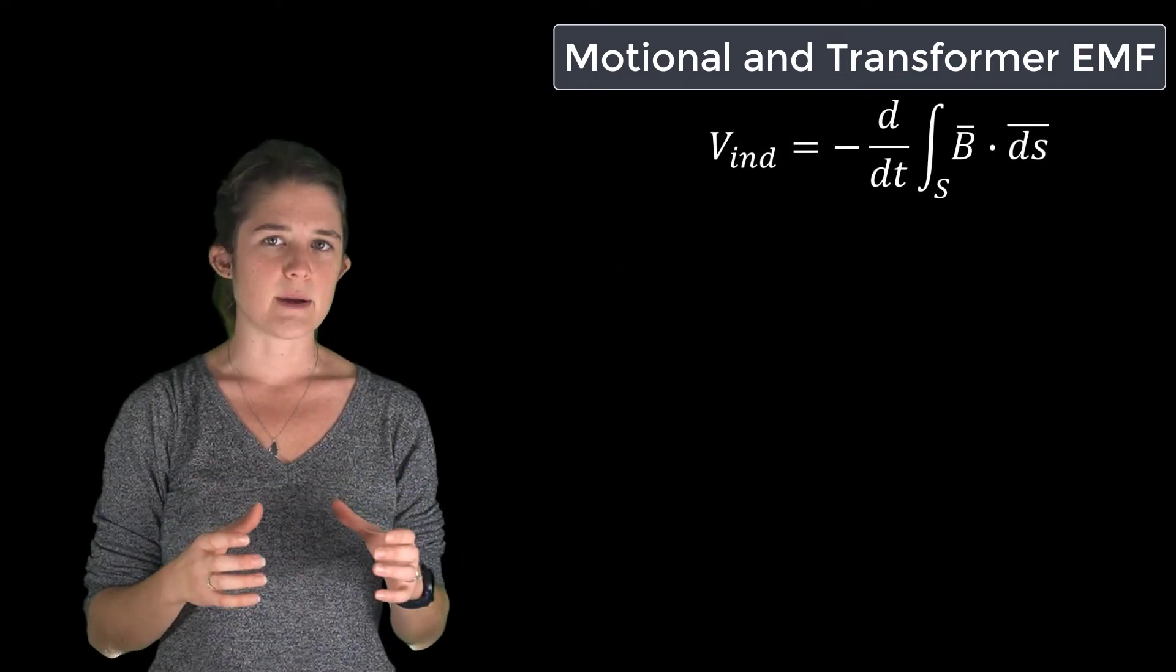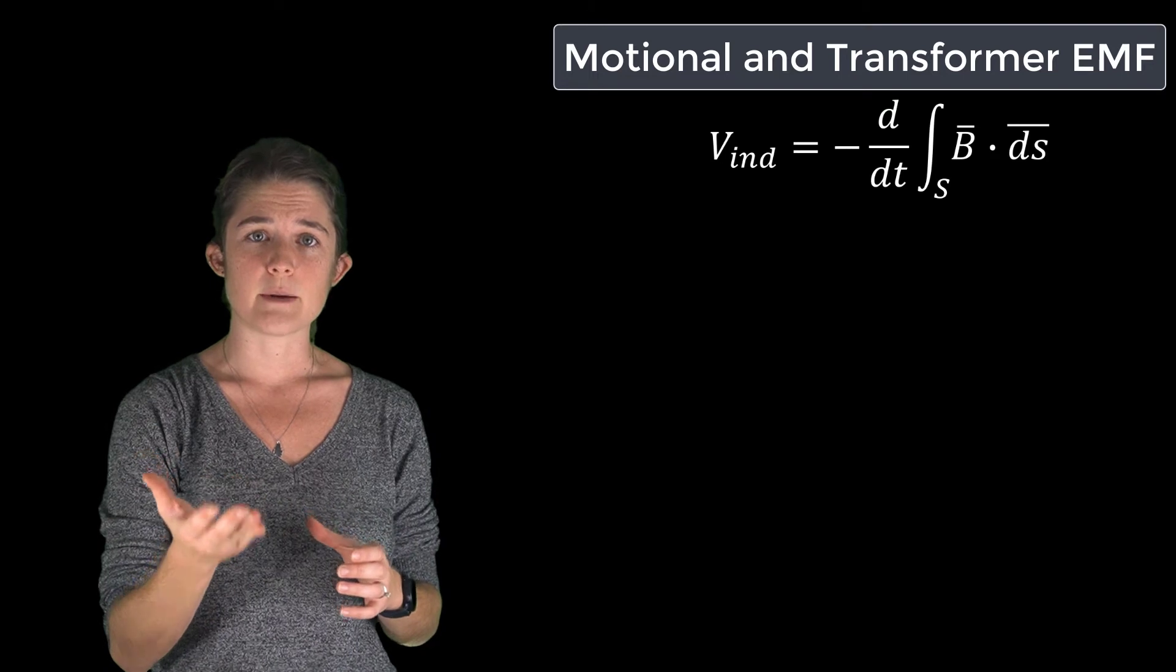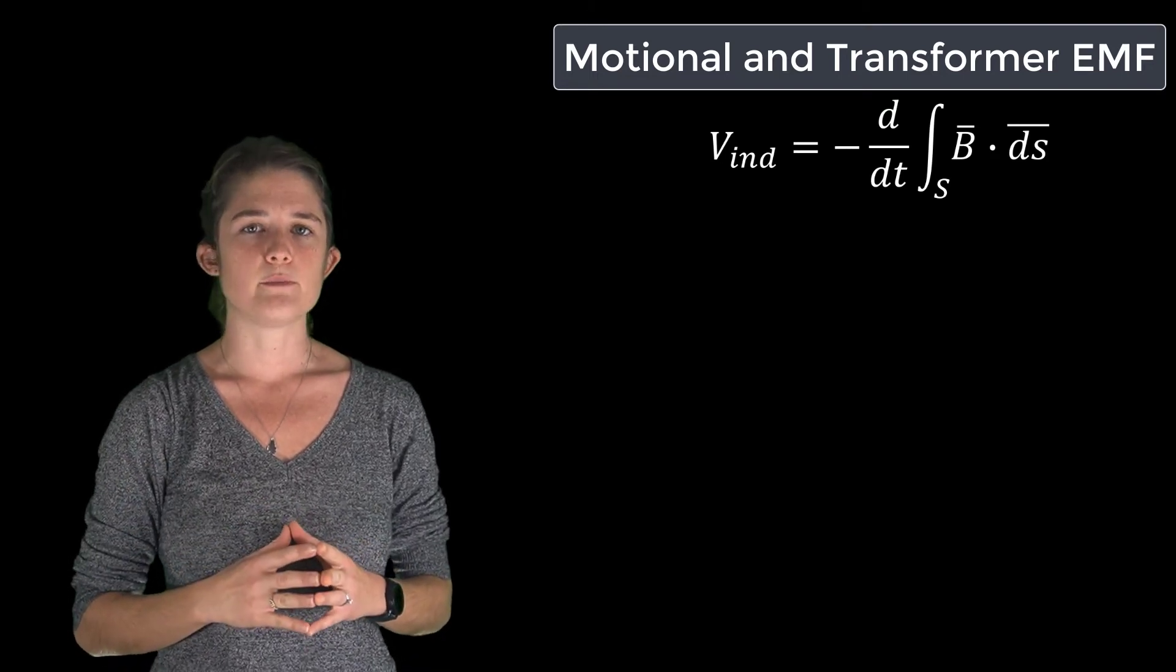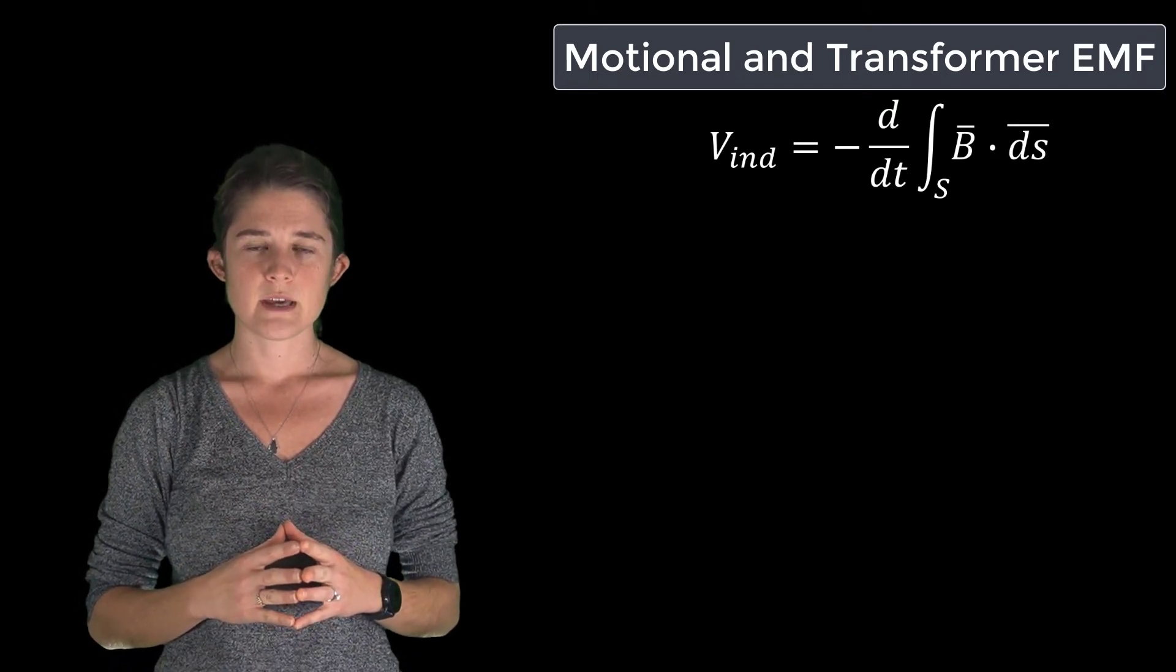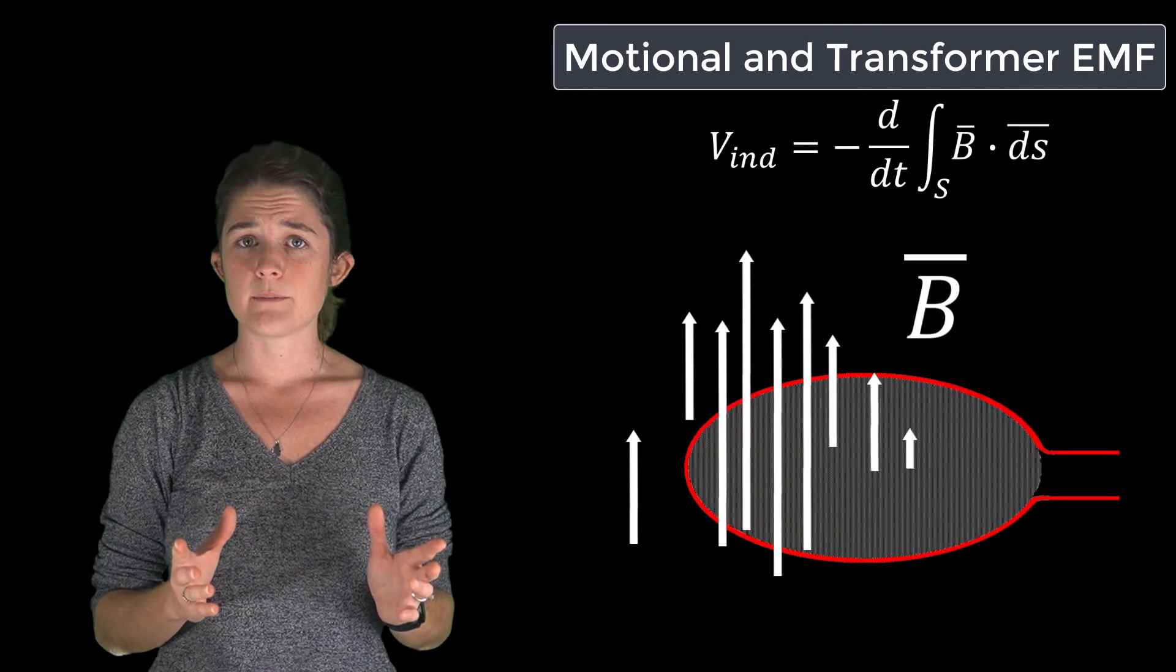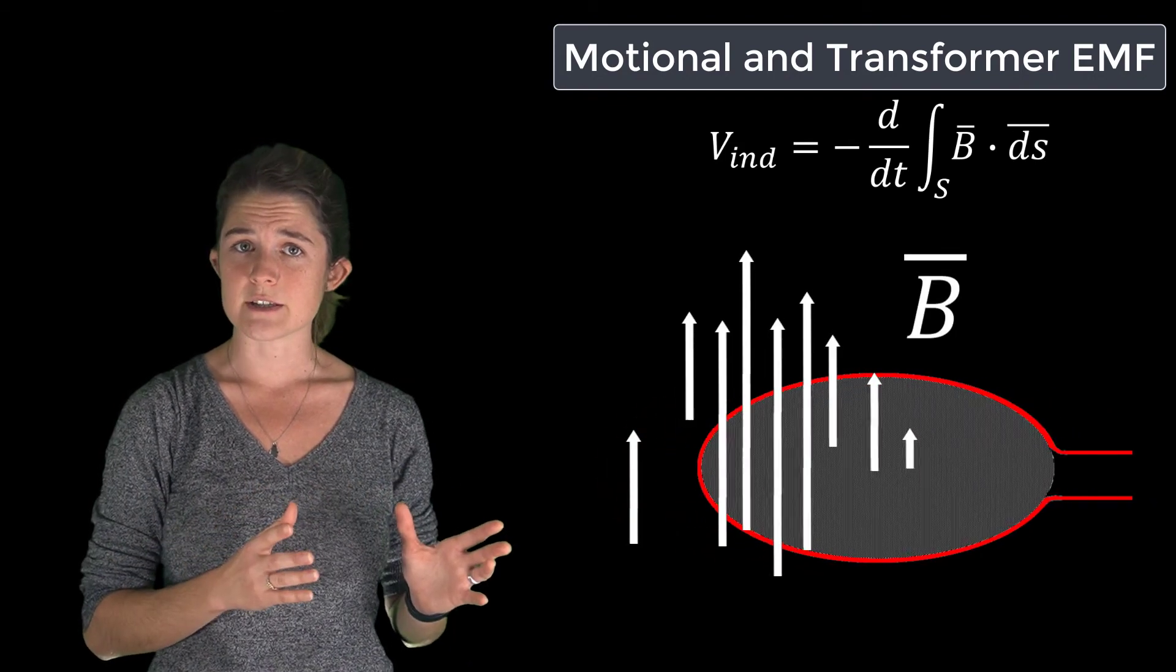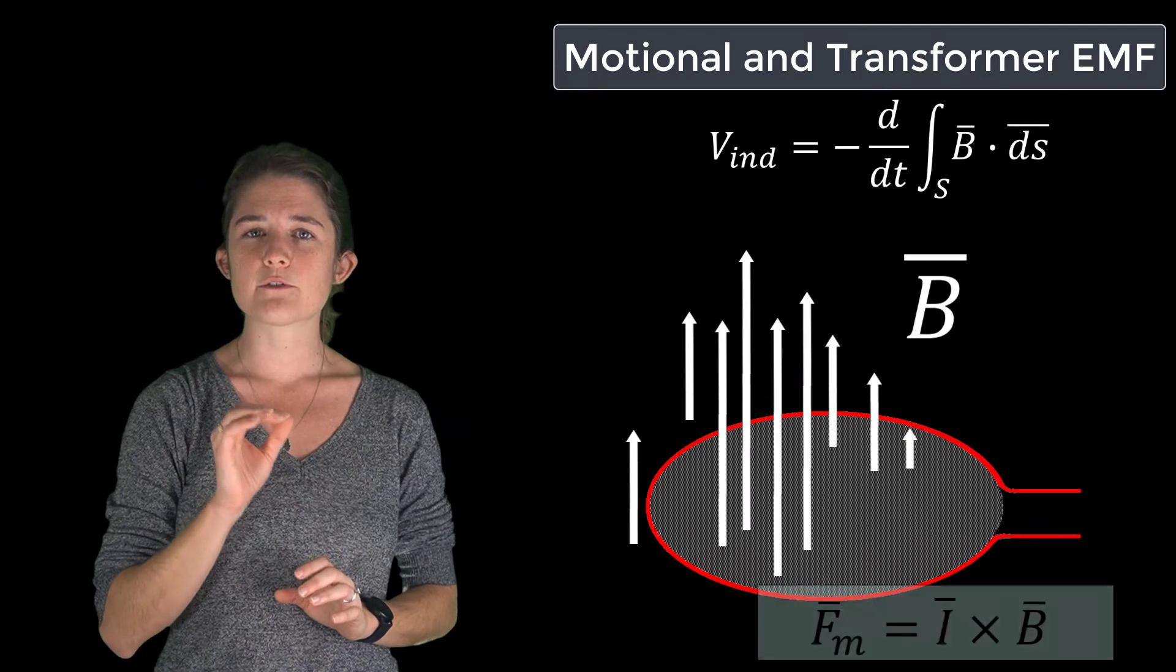But a static magnetic field, such as that produced by a permanent magnet, may also be used to create a voltage. This is done by moving a conductor or a collection of charges within the magnetic field. This produces a